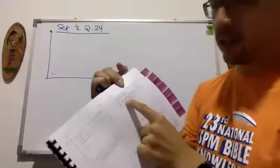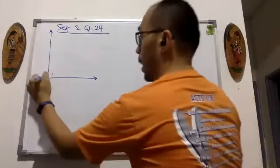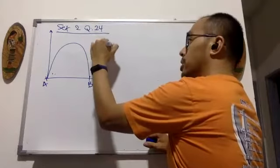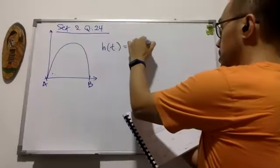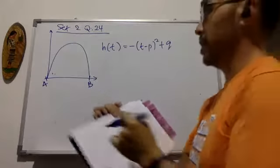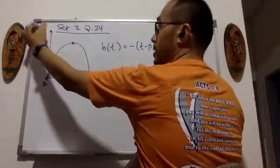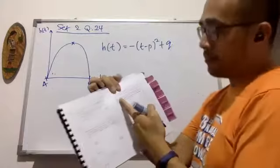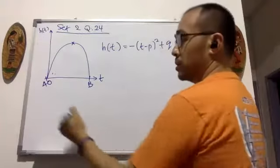The biggest clue in this question is that point A is the origin, which means our rocket launch looks like this — A is here, B is over here — and they give you the function h(t), the quadratic function: h(t) equals minus t minus p all squared plus q. The question asks us to find the maximum height the water rocket can achieve. The y-axis is h(t), which is the height function.